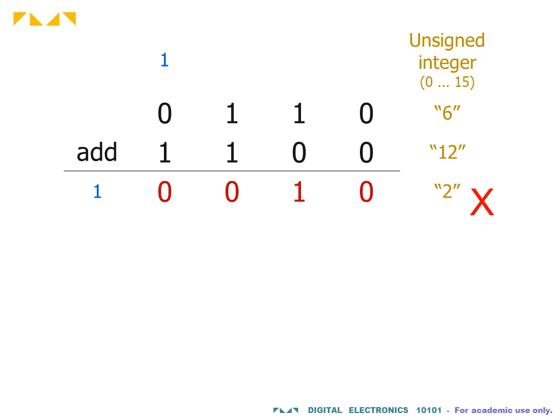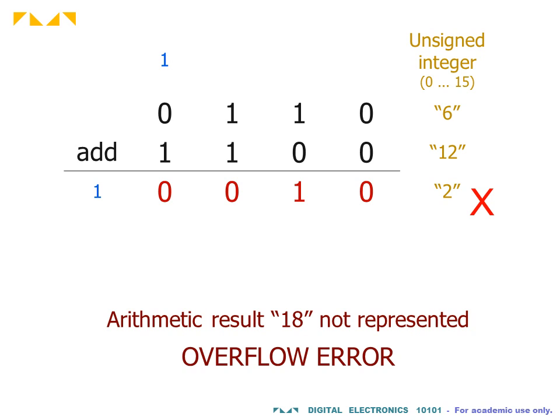In this example, using 4-bit unsigned integer representation, the wrong answer is obtained. This is because 4-bit unsigned integer representation does not support the true arithmetic result. From the previous videos on binary numbers, we saw that this is called an overflow error.